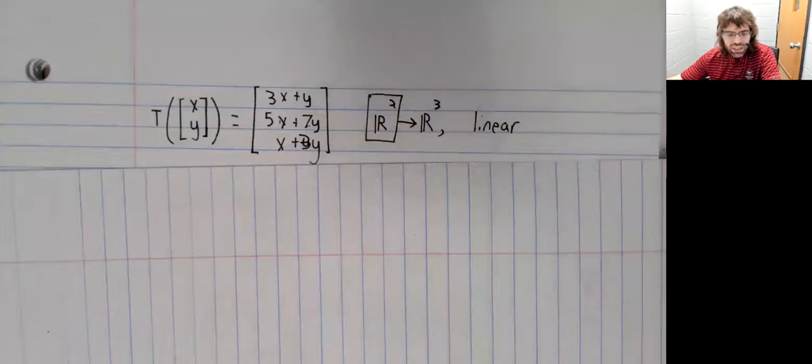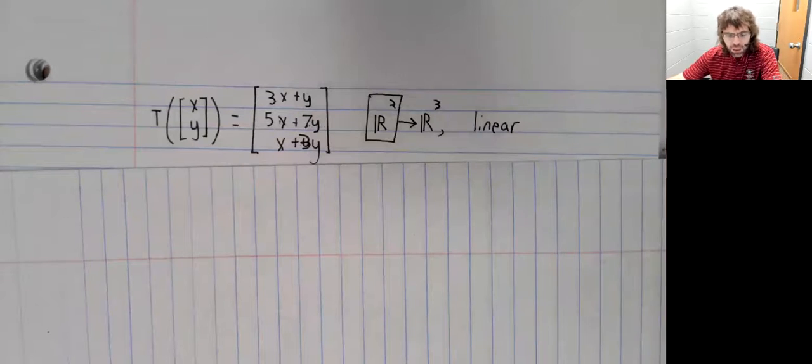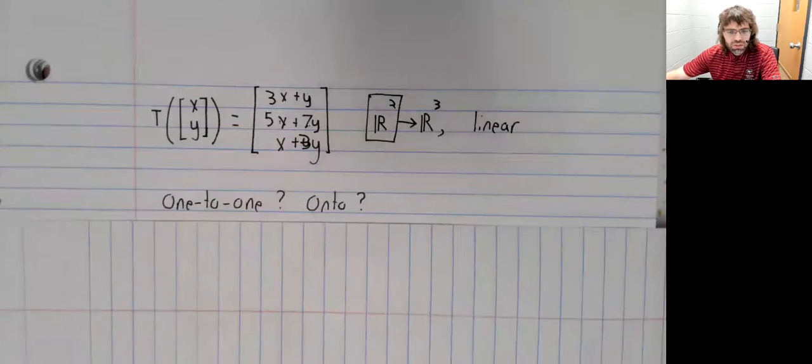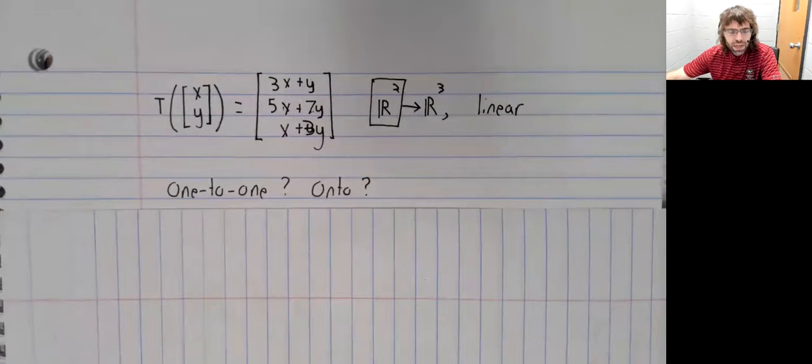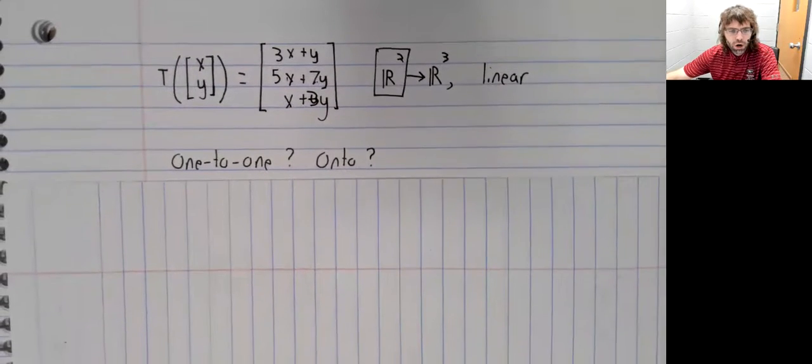looking at this, that it is a linear transformation, but I'm telling you that it is. You don't need to check that. Let's decide whether it's one-to-one and or onto.